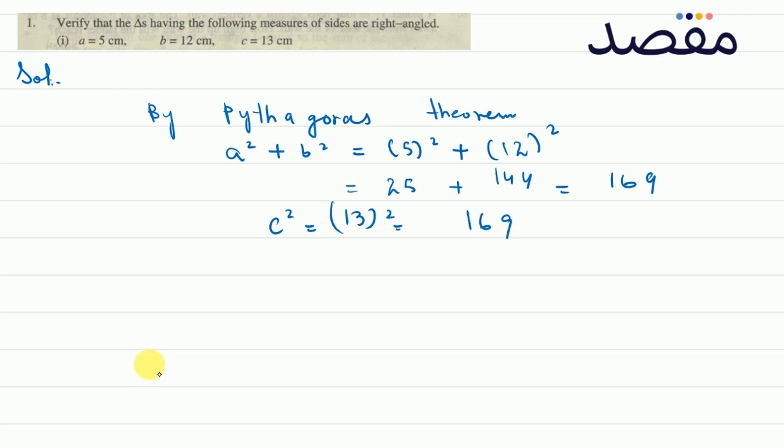So a square plus b square is equal to c square. That's what we have all proved. That's the right angle. That's the triangle is right angled triangle.